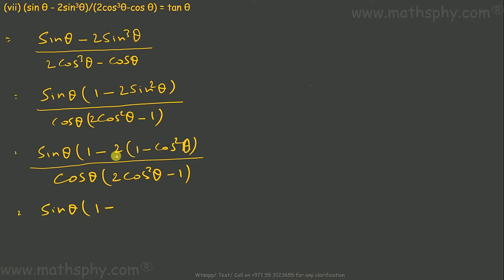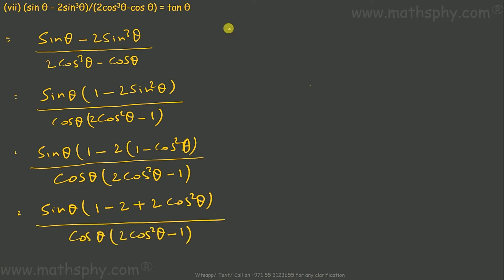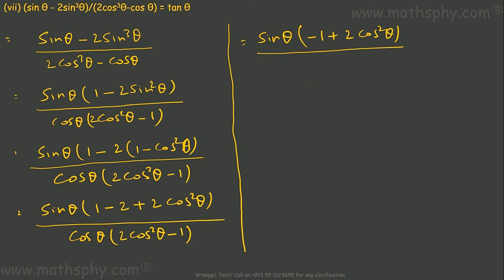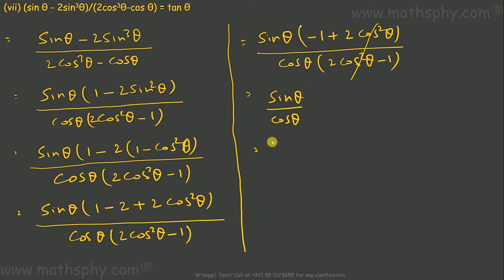So this gives me sin θ times (1 minus 2 sin squared θ) over cos θ times (2 cos squared θ minus 1). Now 1 minus 2 sin squared θ — multiply out: 1 minus 2 plus 2 cos squared θ — that gives minus 1 plus 2 cos squared θ, which is 2 cos squared θ minus 1. You see 2 cos squared θ minus 1 appears in both numerator and denominator — cancelled! This gives sin θ over cos θ, which is tan θ. That's what we had to get. Done.